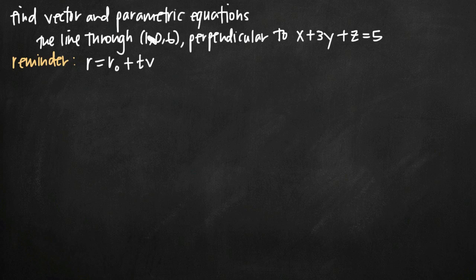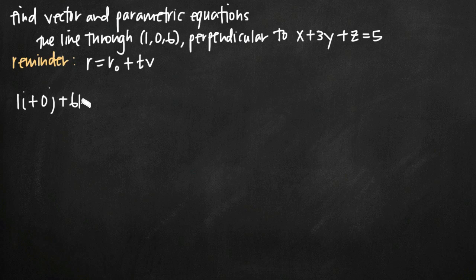To unpack this problem, the first thing we need to realize is that we have a line — we'll call it L. It passes through the point (1, 0, 6). If we want to define this point as a vector, we can call it i plus 6k. We also know that the line is going to be perpendicular to the plane x plus 3y plus z equals 5.